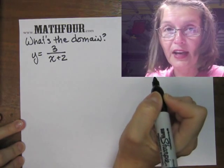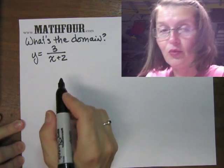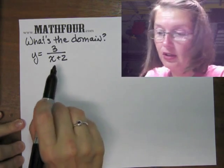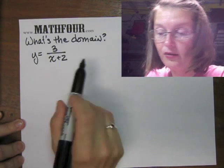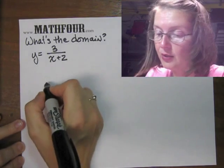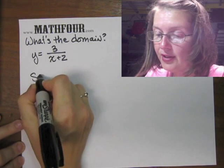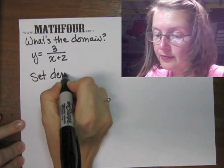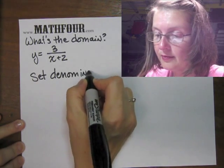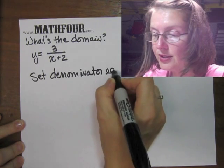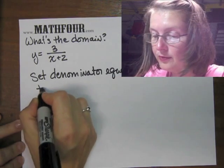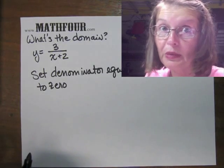So we can say, oh if x is negative 2 we have an issue. Well what if you can't see that right off? What if this is a little bit more involved? So how do you arrive at x = -2? Well you set the denominator equal to zero because that's where the problems will be.